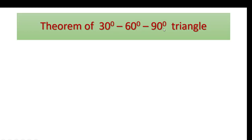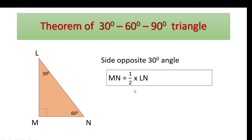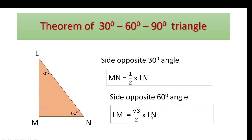Theorem of 30-60-90 degree triangle. In triangle LMN, angle L is equal to 30 degrees, angle M is equal to 90 degrees, and angle N is equal to 60 degrees. The side opposite to 30 degrees is MN, therefore MN is equal to half into LN, where LN is the hypotenuse. The side opposite to 60 degrees is LM, therefore LM is equal to root 3 upon 2 into LN (the hypotenuse).